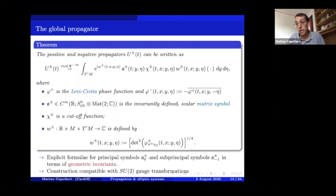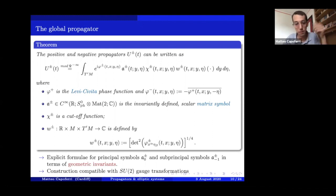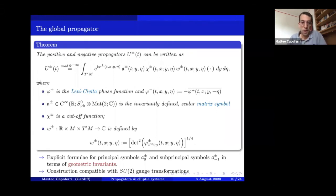The advantage of fixing a distinguished phase function is that the objects obtained are invariant, and one can make sense of a notion of full symbol and sub-principal symbol for Fourier integral operators — objects usually not defined in the literature. For propagators with this distinguished phase function, such definitions become viable and meaningful, and one can provide explicit formulas for the principal symbol and sub-principal symbol in terms of purely geometric invariants.